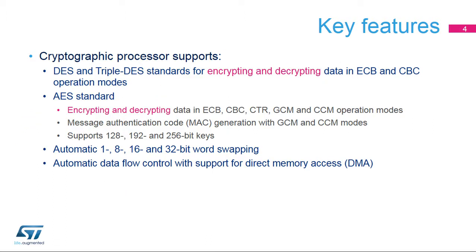The Cryptographic Processor supports the Data Encryption Standard, or DES, the Triple DES, and the Advanced Encryption Standard, or AES, in several operating modes described in the next slides. Both standards are part of the block cipher algorithm family. DES uses a 56-bit key, while AES, which is more robust, can be used with a key of 128, 192, or 256 bits. A full data flow can be automated with the help of the Direct Memory Access Controller, or DMA.